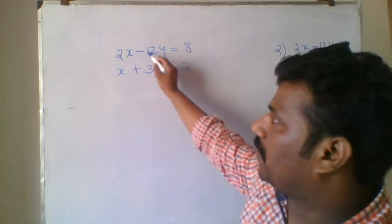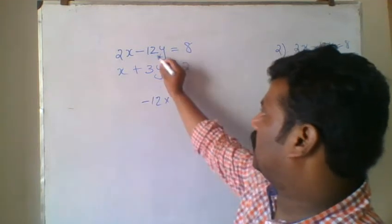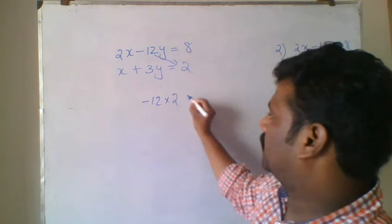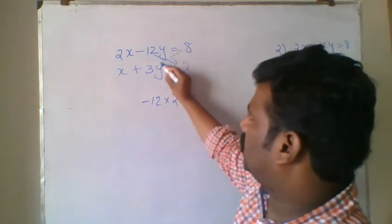Here you can see the coefficient of y is minus 12 and minus 2. One multiply with the 2 value minus this will be this.